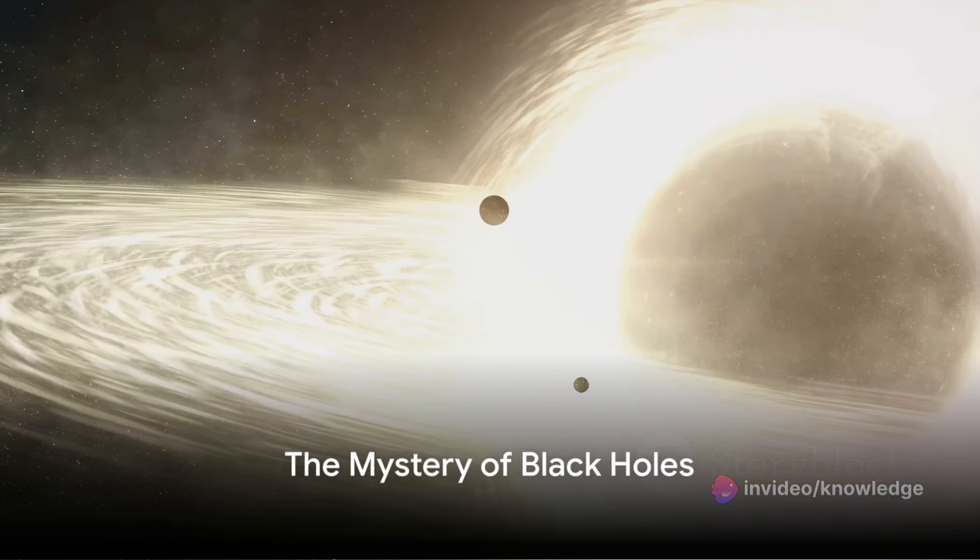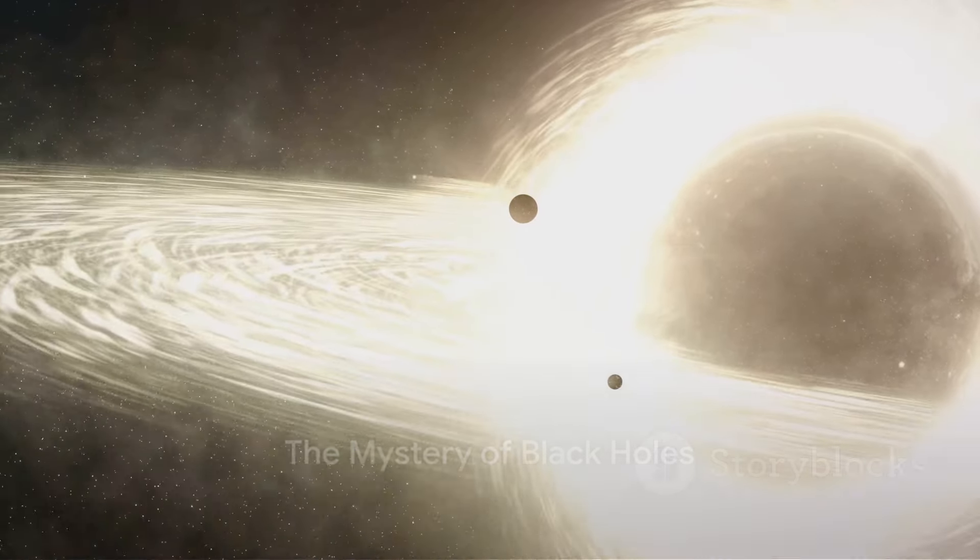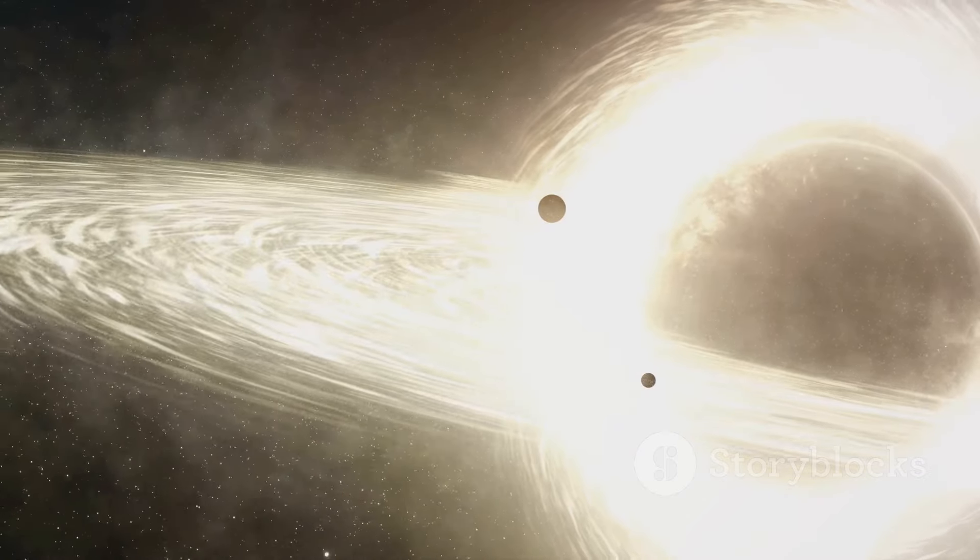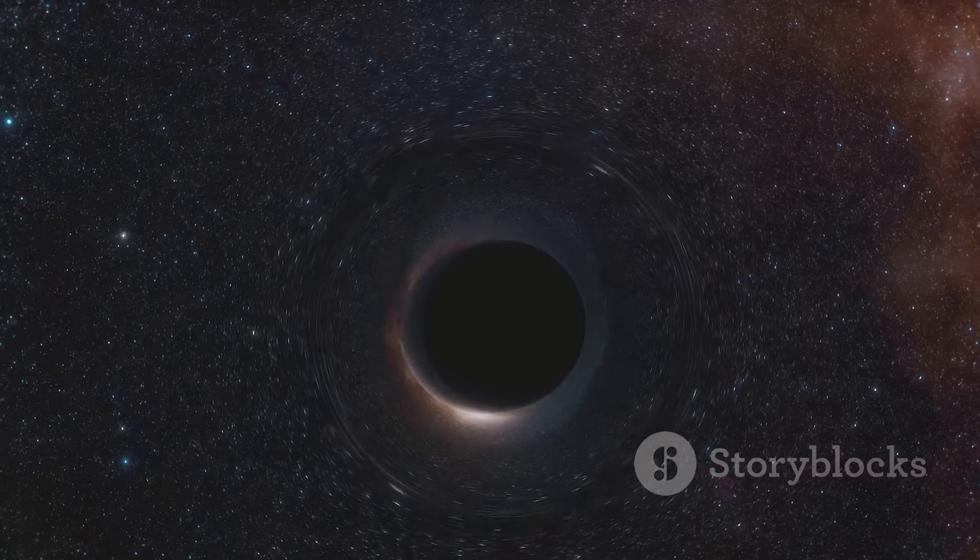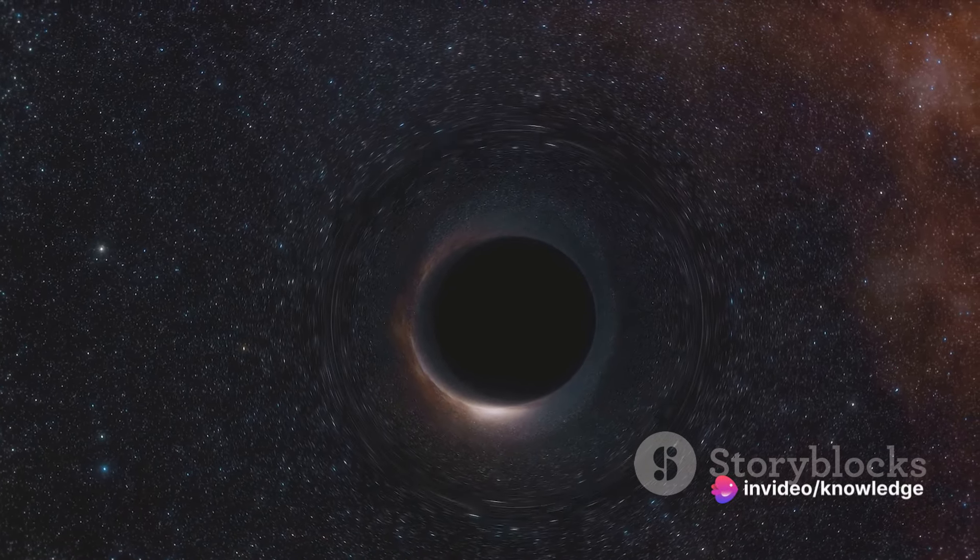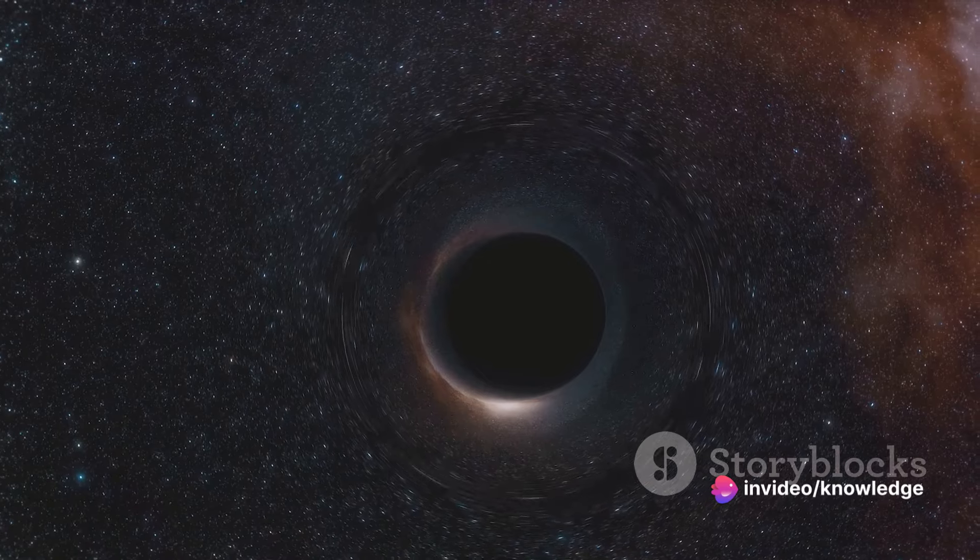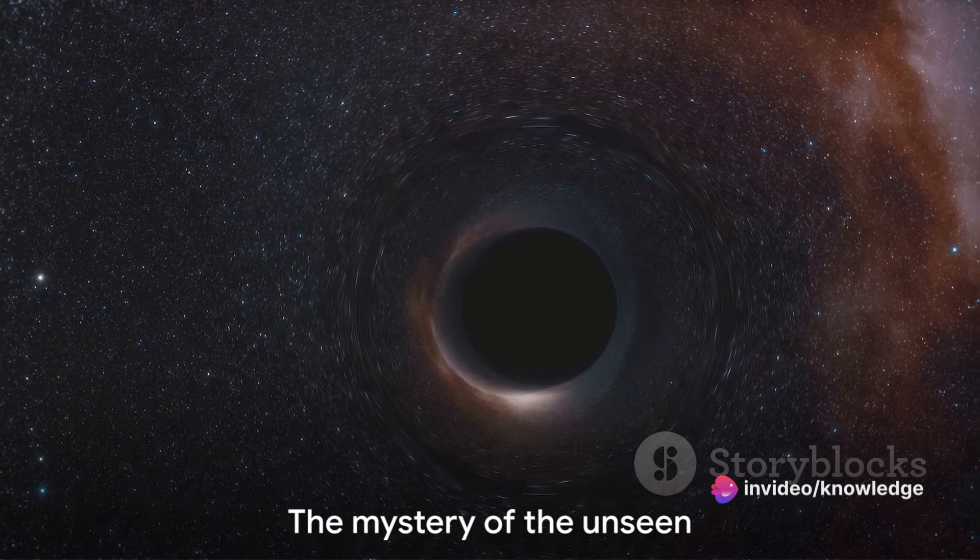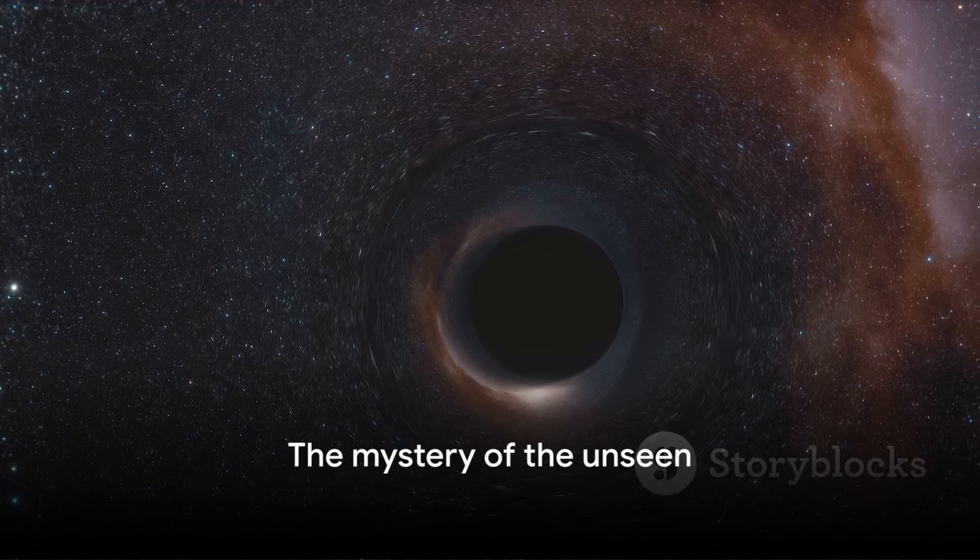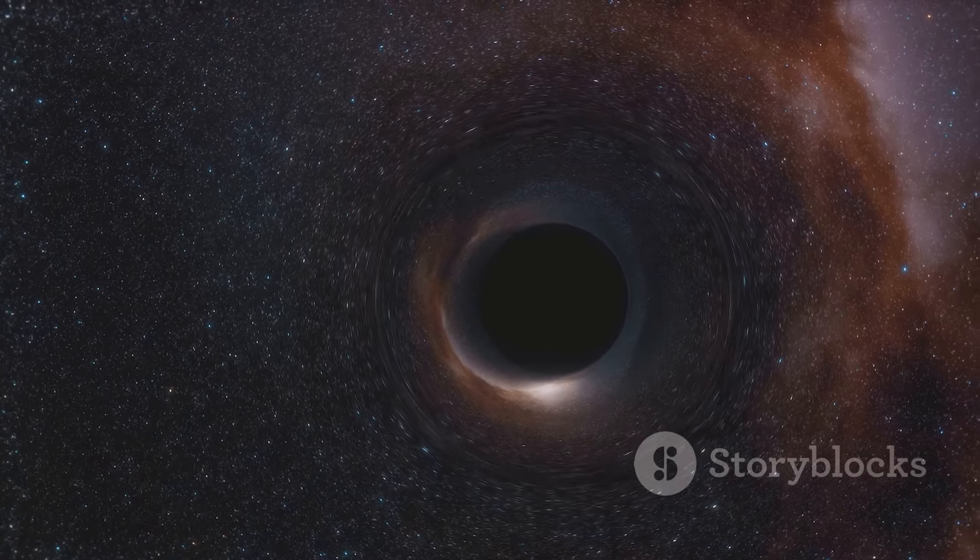But what is a black hole exactly? It's a region of space where gravity is so strong that nothing can escape. Not planets, not stars, not even light. Anything that gets too close to a black hole is sucked in, never to return. That's why we call them black holes. They're invisible to our eyes.